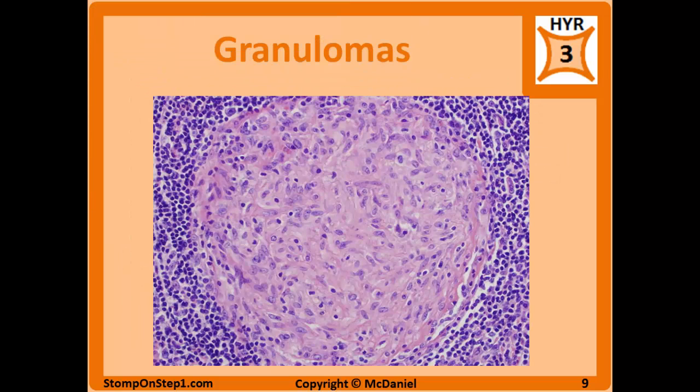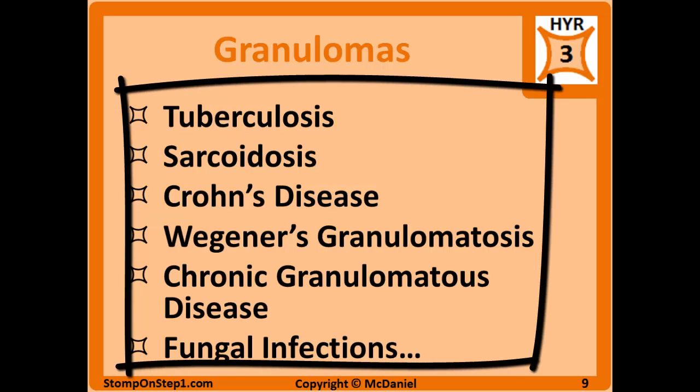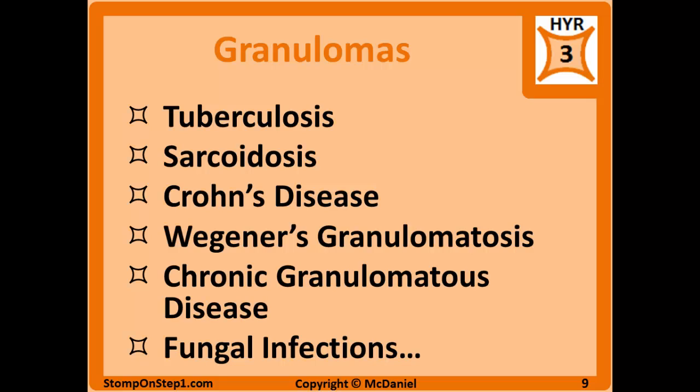You also need to be able to pick a granuloma out in a picture. In a classic granuloma image, you'll see a very circular shape with a rim of dark purple inflammatory cells — those are the epithelioid histiocytes and leukocytes. In the middle, sometimes you'll have necrosis, and other times you will not. Granulomas can result from many different diseases and infections, so when you see granulomas or buzzwords suggesting them in a question stem, think of the most common conditions: tuberculosis, sarcoidosis, Crohn's disease, Wegener's granulomatosis, chronic granulomatous disease, and fungal infections.